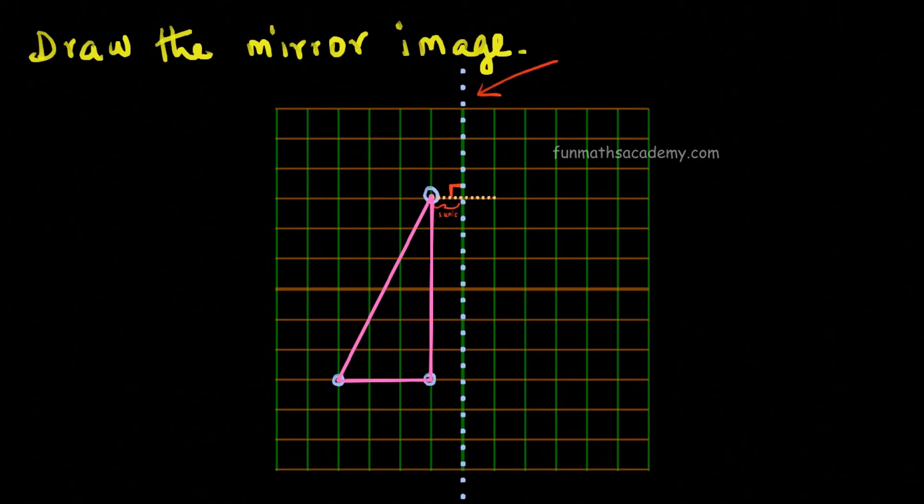Then, measure the distance of this point from the mirror line and mark a point on the other side at the same distance. When you connect all these corners, you will get the mirror image.